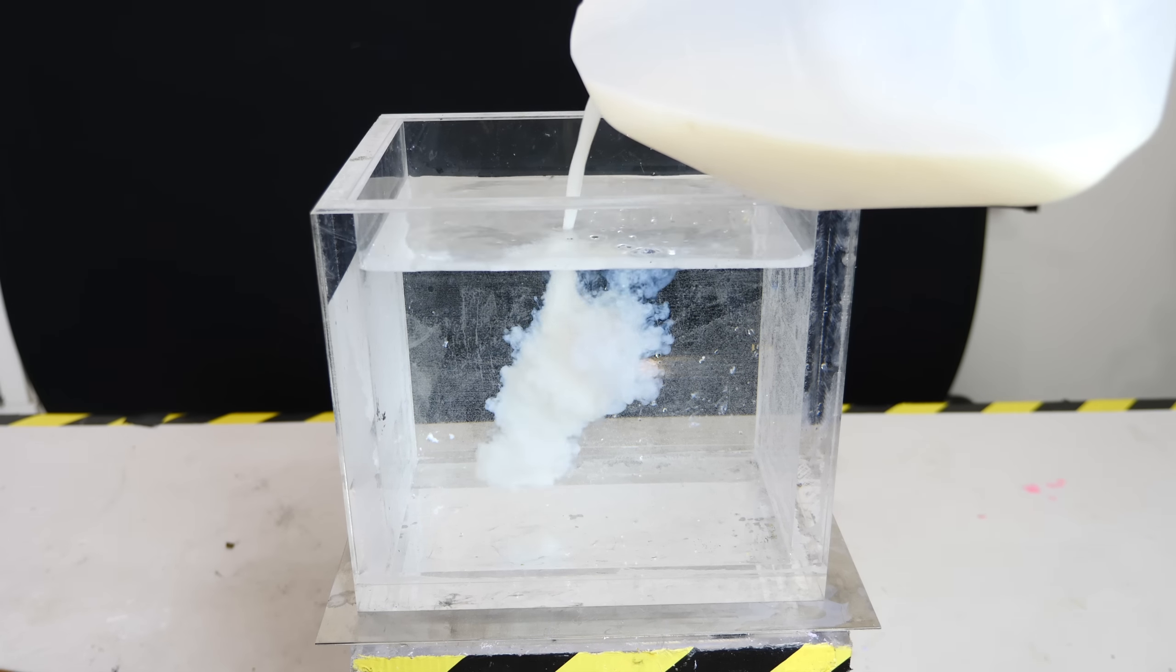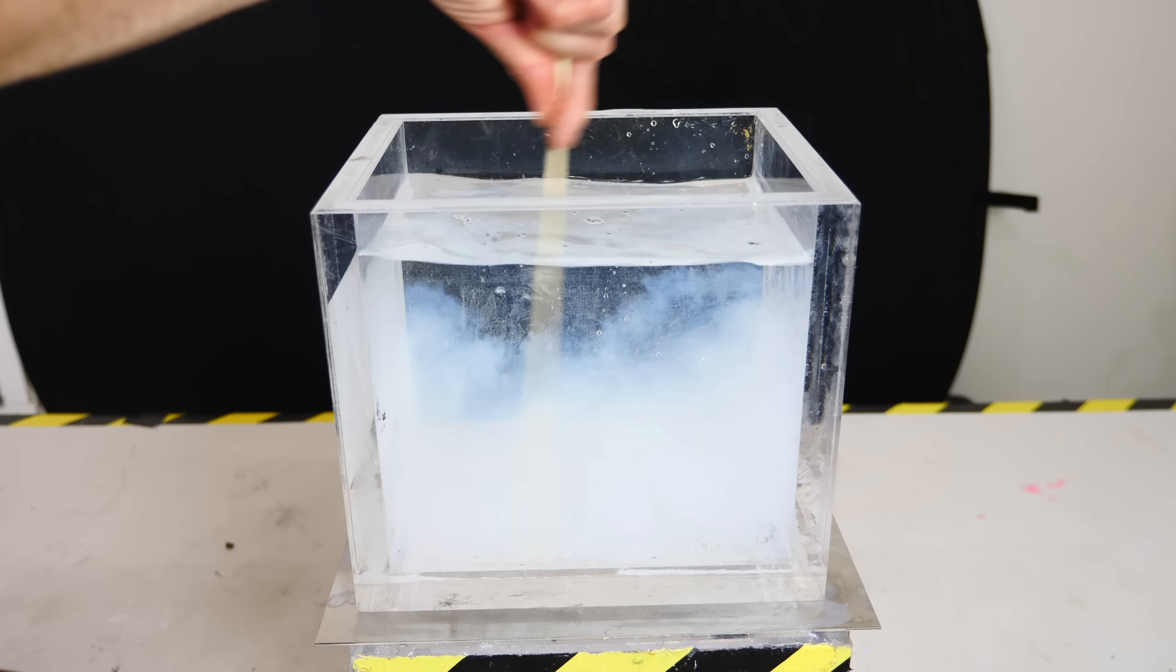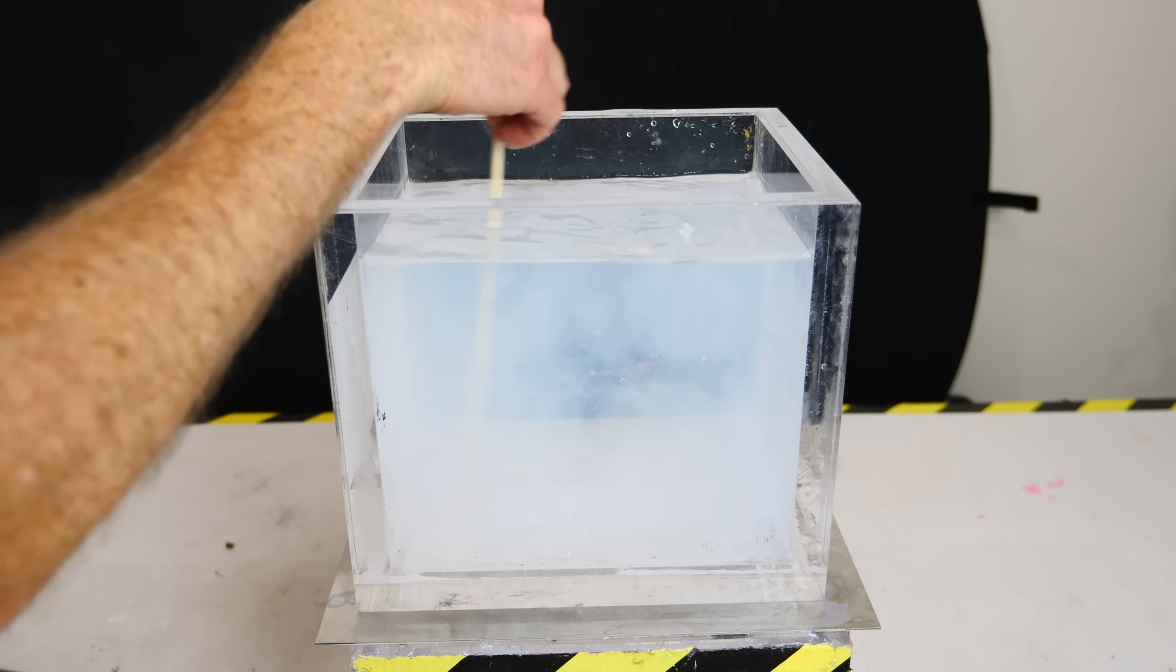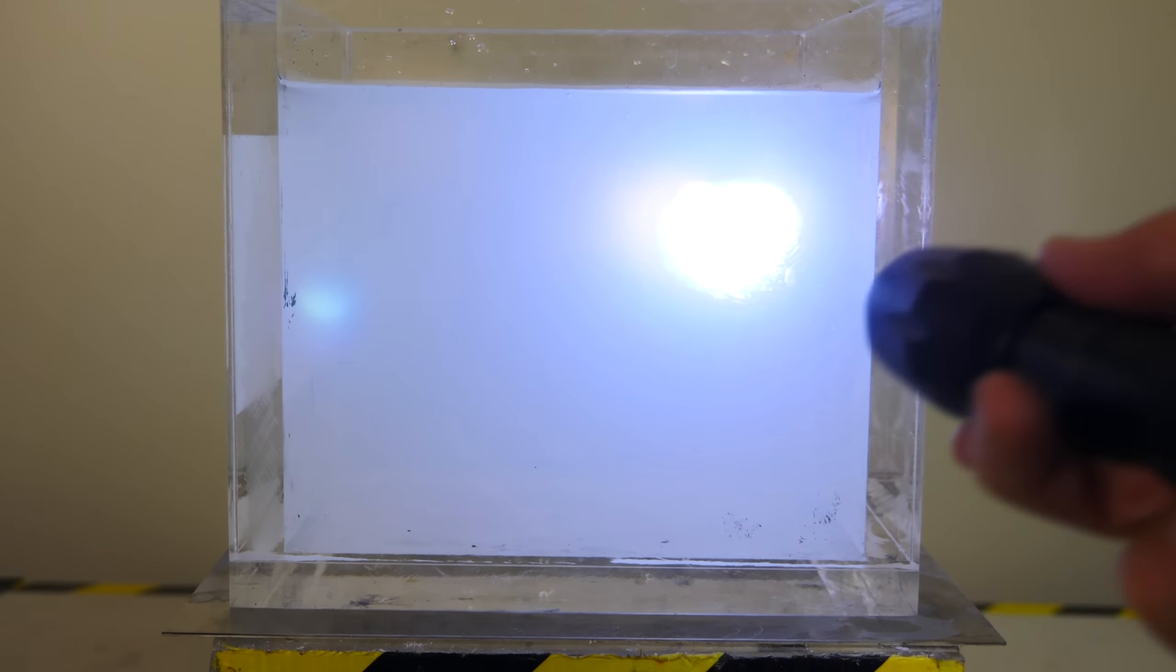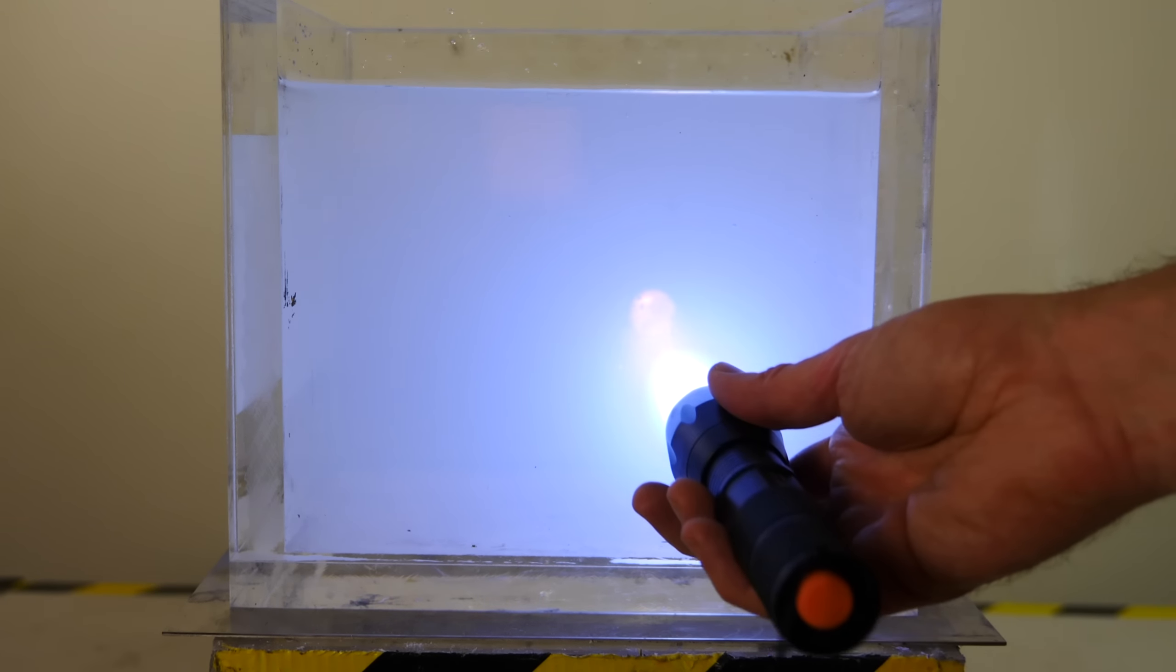So in order to simulate the sky, you just get some water and pour some milk in it. The first thing you'll notice is that this water-milk mixture doesn't actually look white anymore - it actually looks blue.